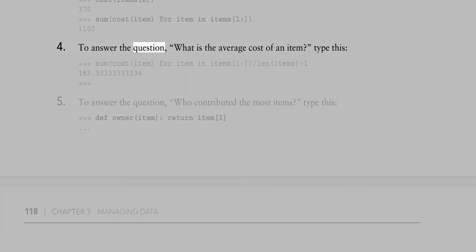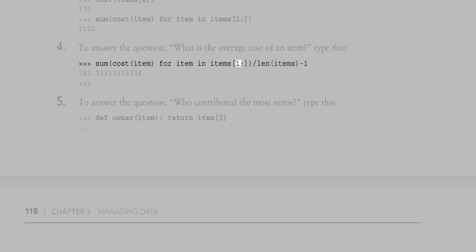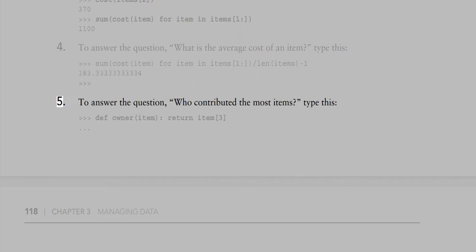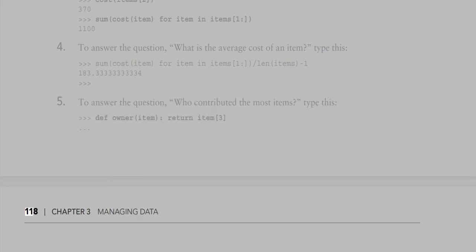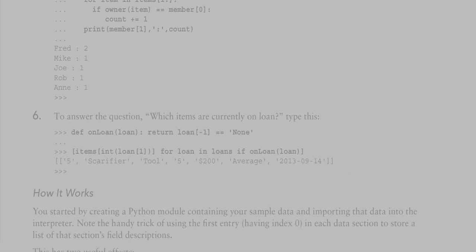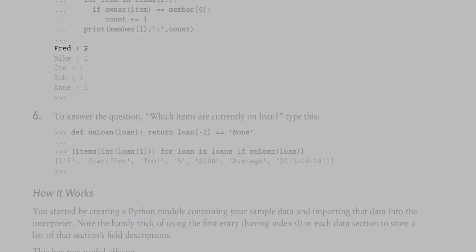To find the average cost, divide the total cost by the number of items: sum(cost(item) for item in items[1]) / len(items[1]) gives 183.333. To find who contributed the most items, define an owner function that extracts the owner ID field, then loop over all members counting how many items each member owned. The result shows Fred: 2, Mike: 1, Joe: 1, Rob: 1, Ann: 1.